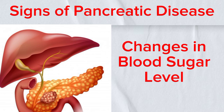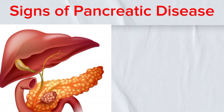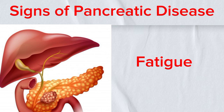Seventh, changes in blood sugar levels: fluctuations in blood sugar levels, leading to symptoms of diabetes, can occur when pancreatic diseases affect insulin production. Eighth, fatigue: persistent fatigue and weakness can result from pancreatic diseases due to their impact on nutrient absorption and metabolism.